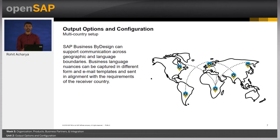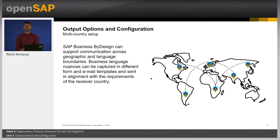SAP Business by Design can support communication across geographic and language boundaries. Business language nuances can be captured in different form and email templates and sent in alignment with the requirement of the receiver country. All the configuration explained can be used to enable multiple country channel output, with each output configured to be sent in the receiver country's language. In the demo, you will see that the output settings work with the sender country and receiver language context, and communication can be defined based on these two parameters.